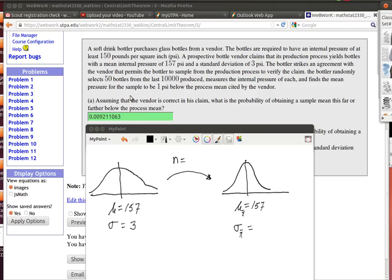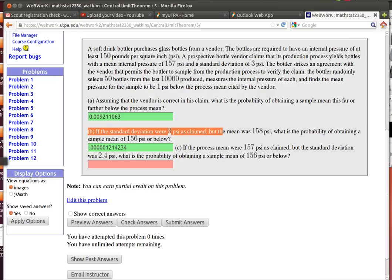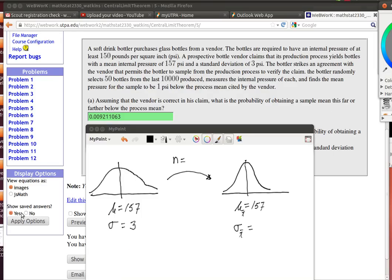We're going to come into this situation and take a sample of size 50, and then we look at the mean that we get from that sample. Now what the problem says is that it gets one less than what the manufacturer said it was supposed to be. So our sample is right here at 156. That's the mean of our particular sample.